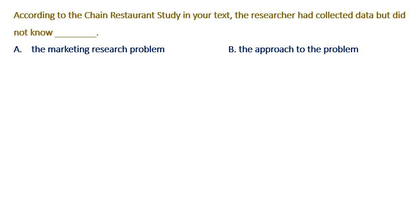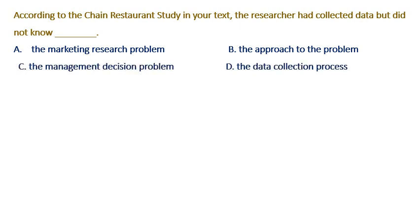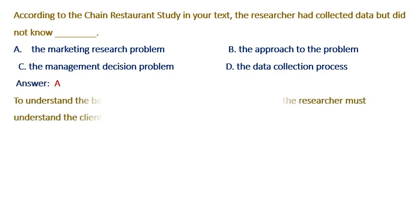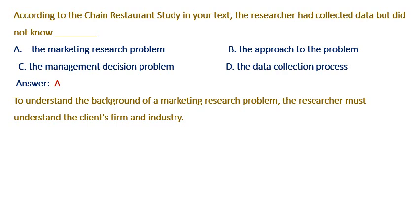Now, some true and false statements and multiple choice questions. According to the chain restaurant study, the researcher had collected data but did not know the background. The right answer is A: to understand the background of the marketing research problem, the researcher must understand the client's firm and industry. That is obviously true.